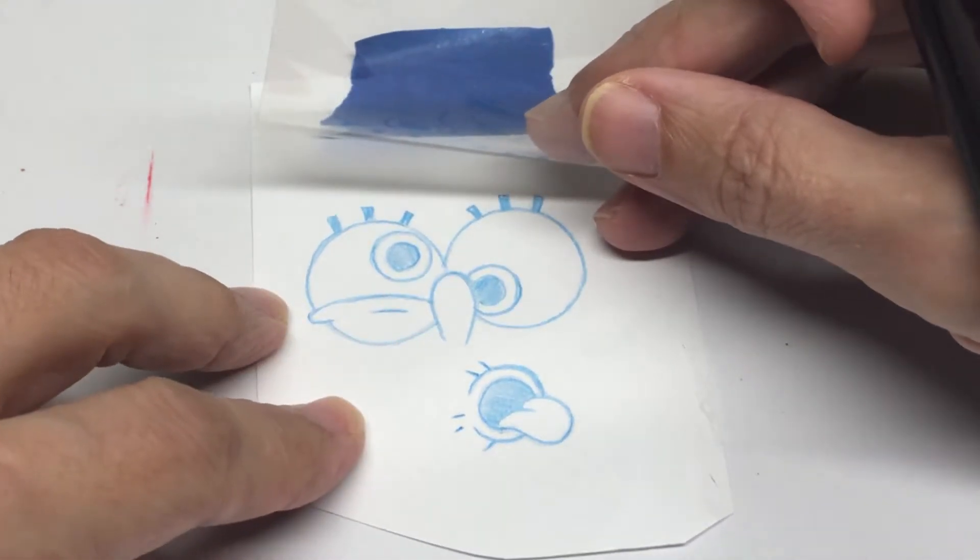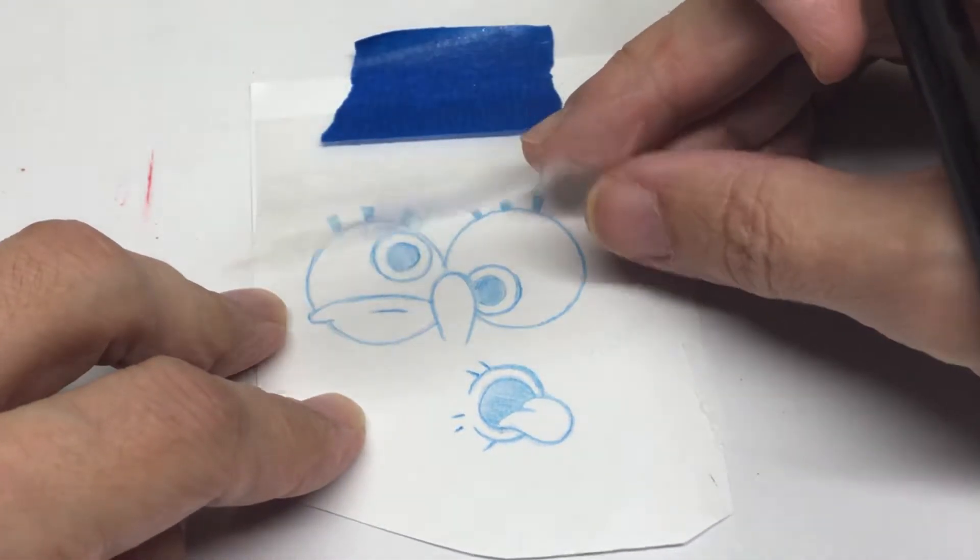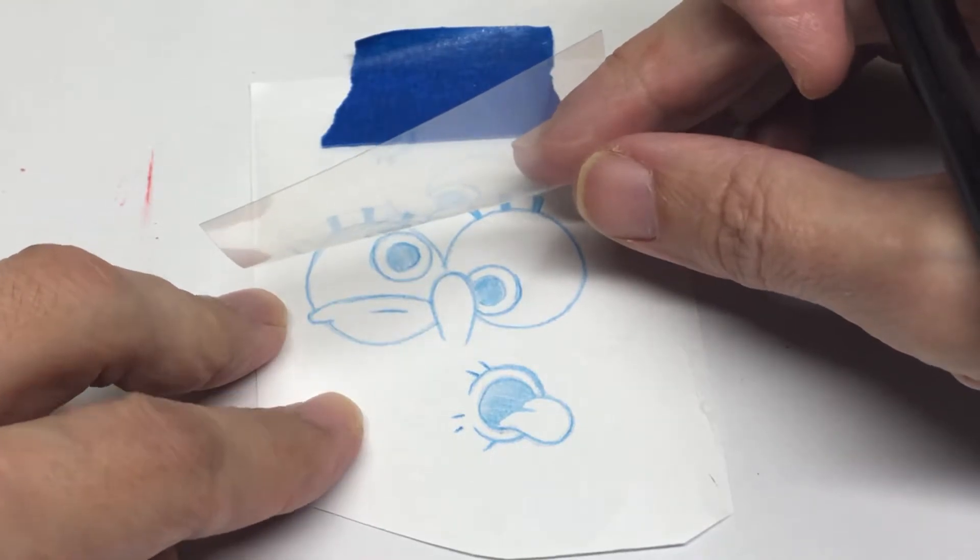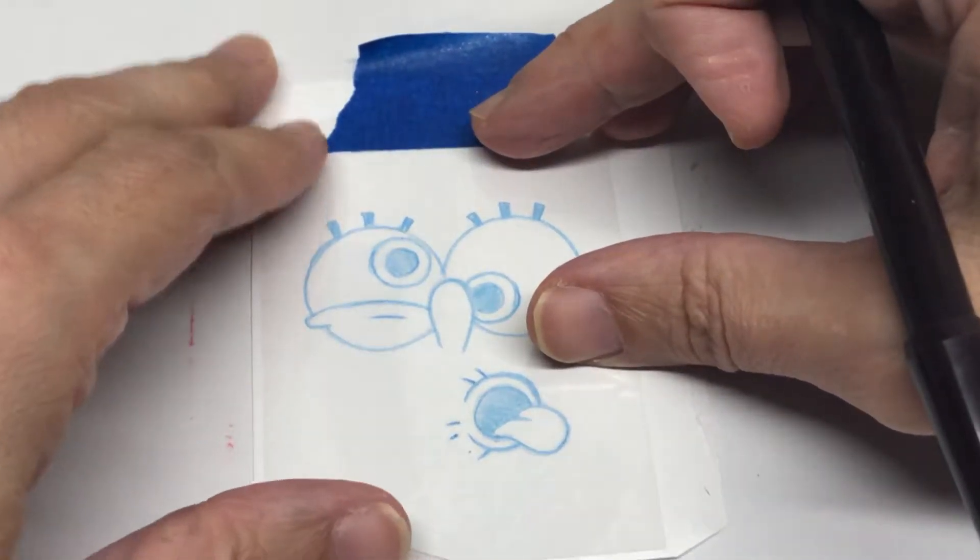I thought I would take this sketch that I did of SpongeBob and make it into a cell. So let's get started.